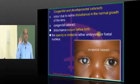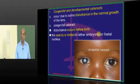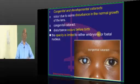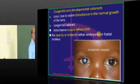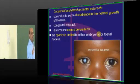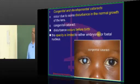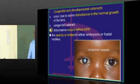On day one we finished Glaucoma, which is a major topic. Today we also have a very major topic which is called cataract, and tomorrow we will have uveitis. These are the three major topics. After that, all remaining topics we can finish in about 10 to 15 minutes each. So let us make a start on cataract.